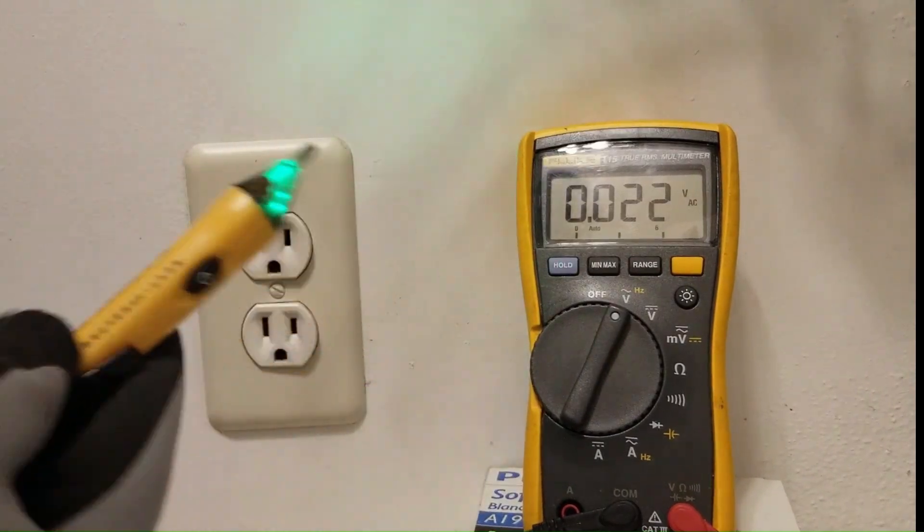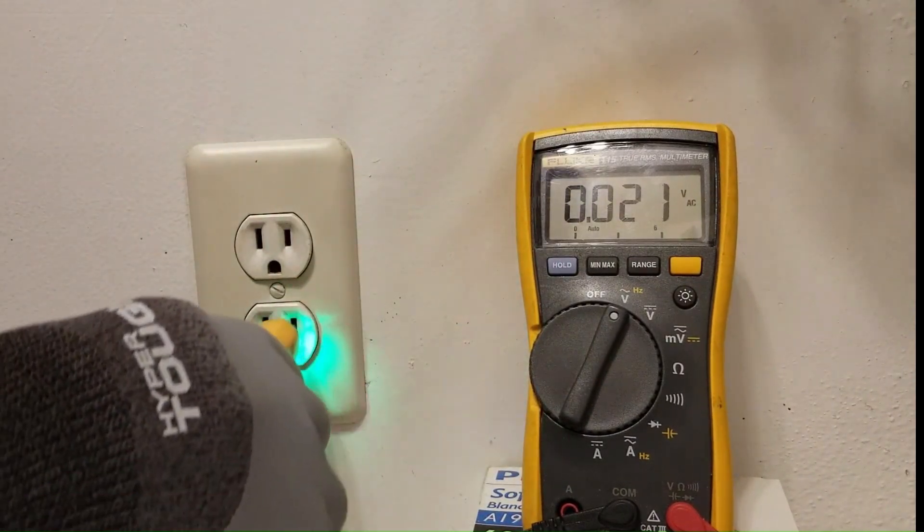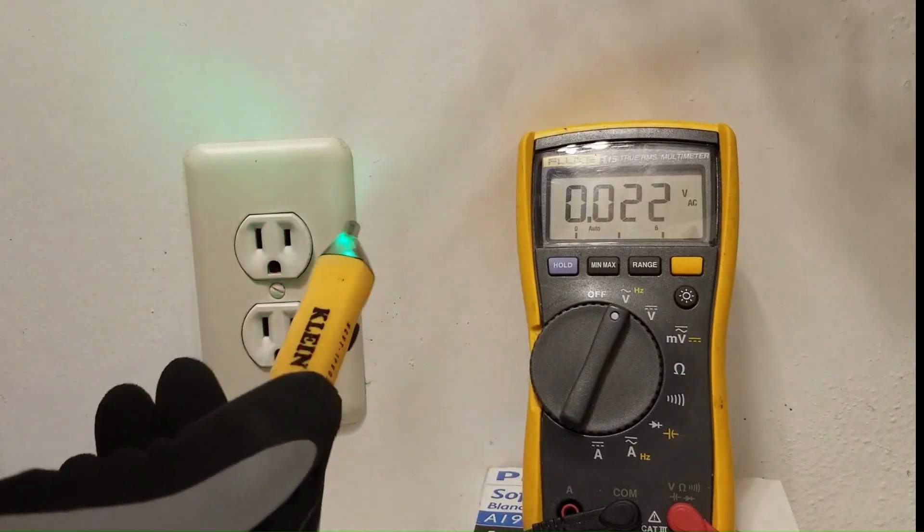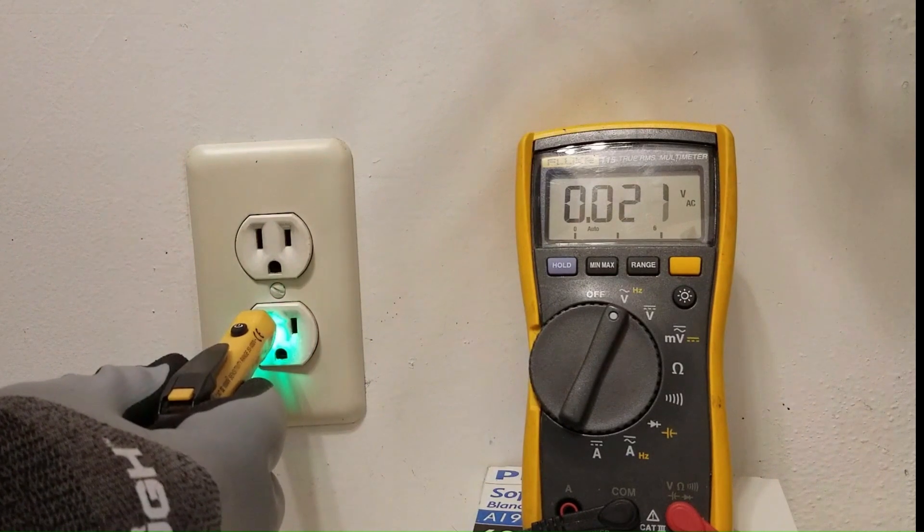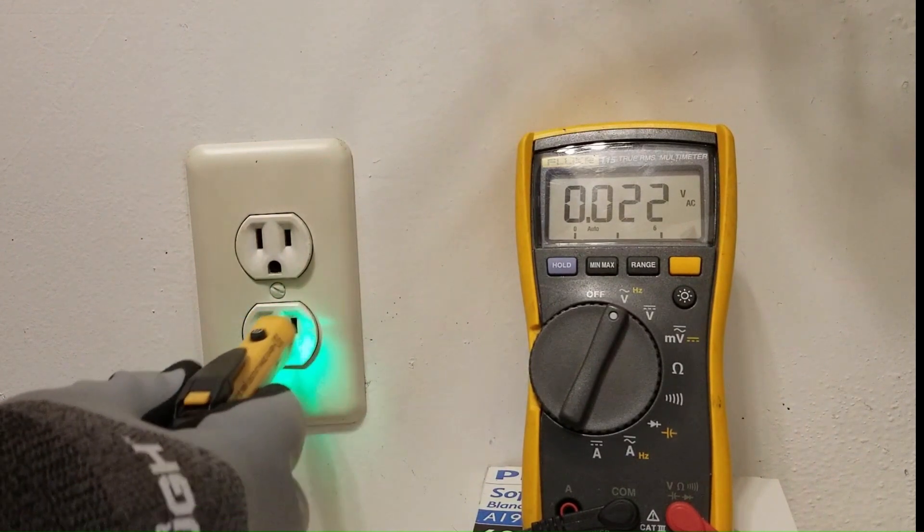So normally a voltage pen is going to give us on a good outlet a reading on the hot like this, which it should, and no reading on the neutral because neutral should be zero volts right?